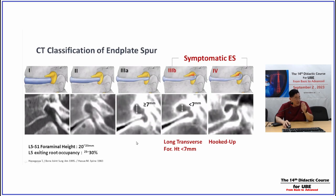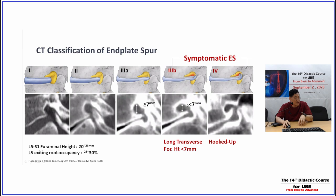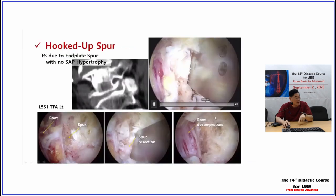Sung-Shob Park, a Korean spine surgeon, categorized end plate spurs morphologically on CT. Normally there is a little protrusion — that is normal. A short oblique or short transverse protrusion is also generally okay since the foramen is wide and non-symptomatic. But a transverse-long spur with foraminal height less than 7 millimeters and a hooked, upward-growing spur can irritate and squeeze the nerve root — that is a pathologic end plate spur. The foraminal height at L5 is at least 20mm, with a nerve occupancy of maximally 30%, meaning at least 6 millimeters must be preserved. Below 7mm, nerve root compression occurs.